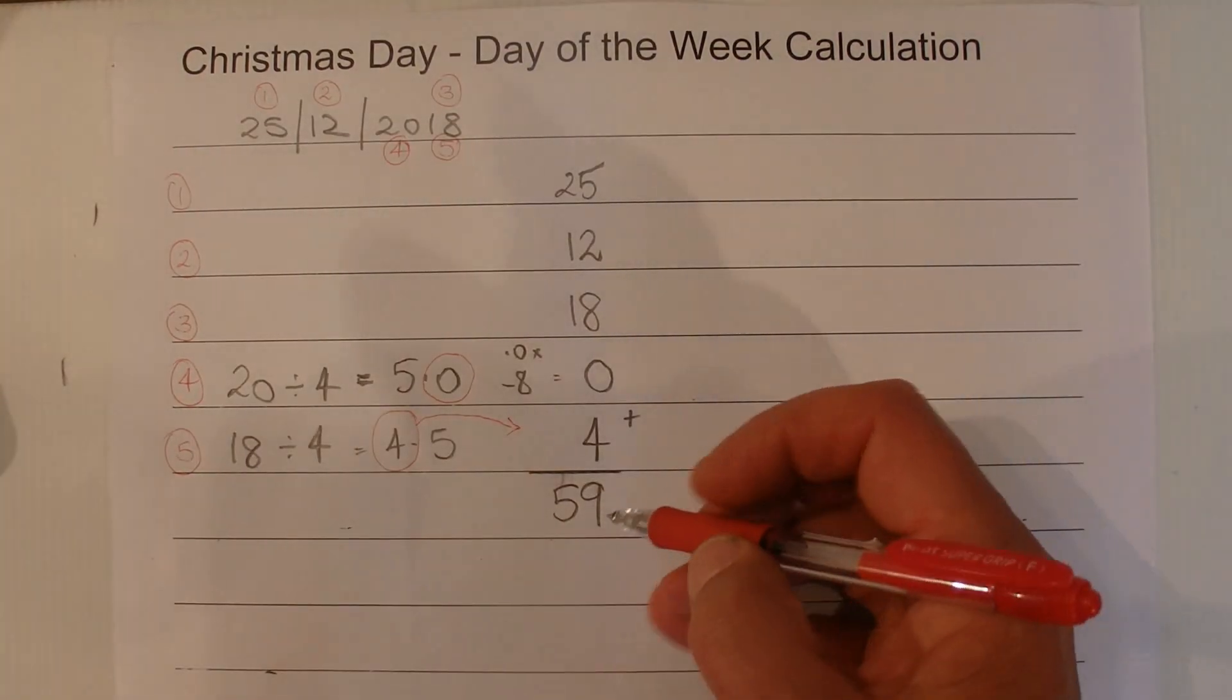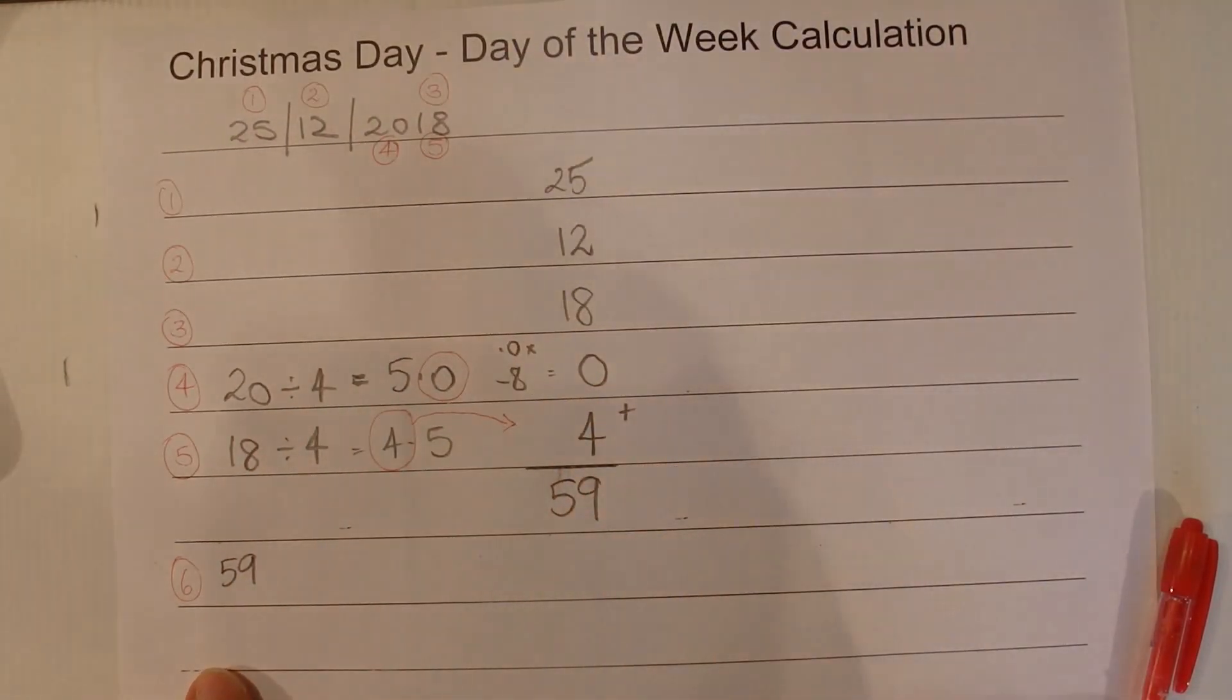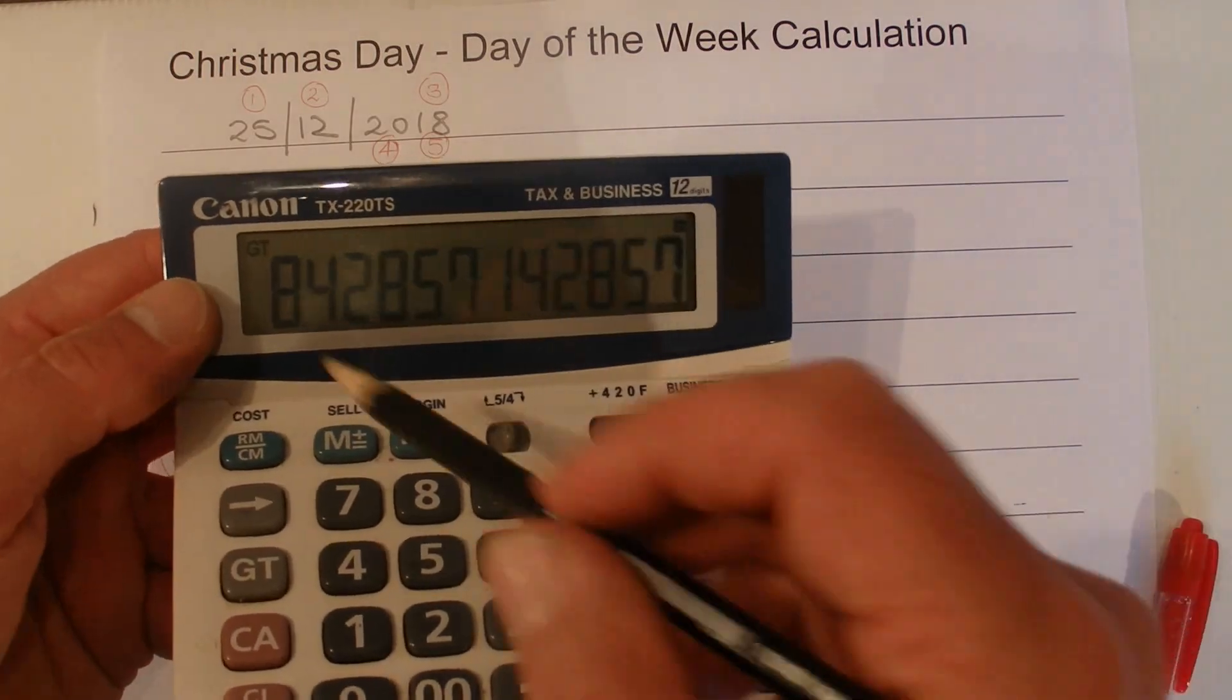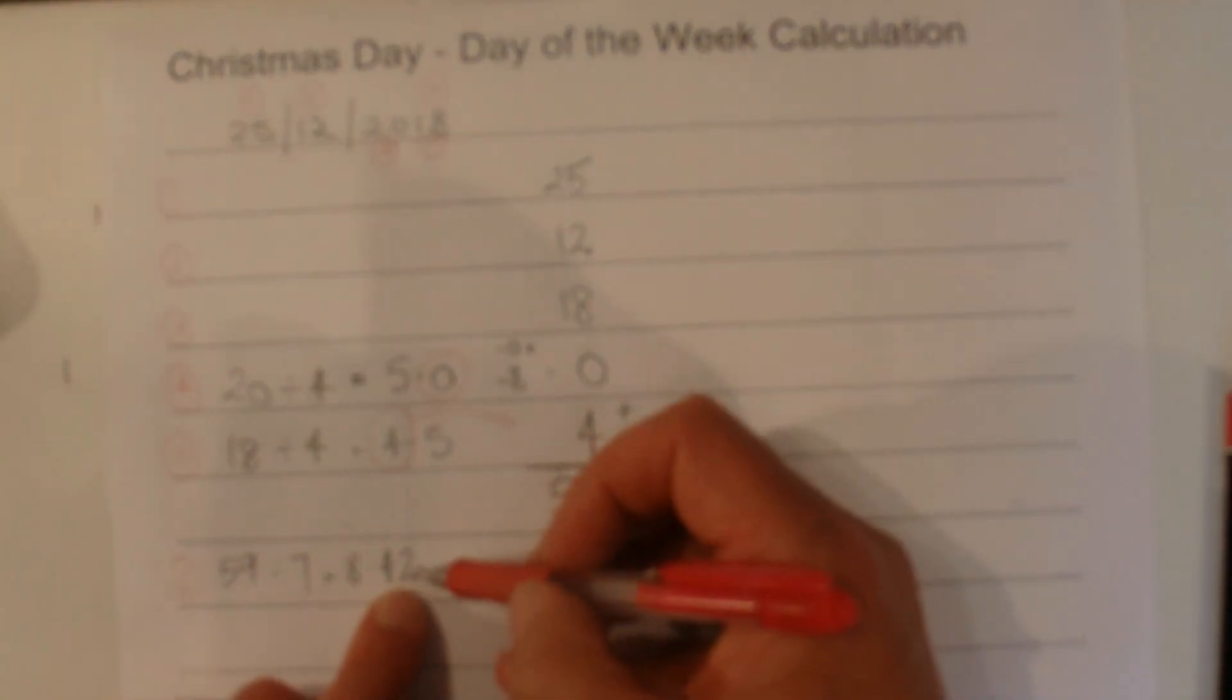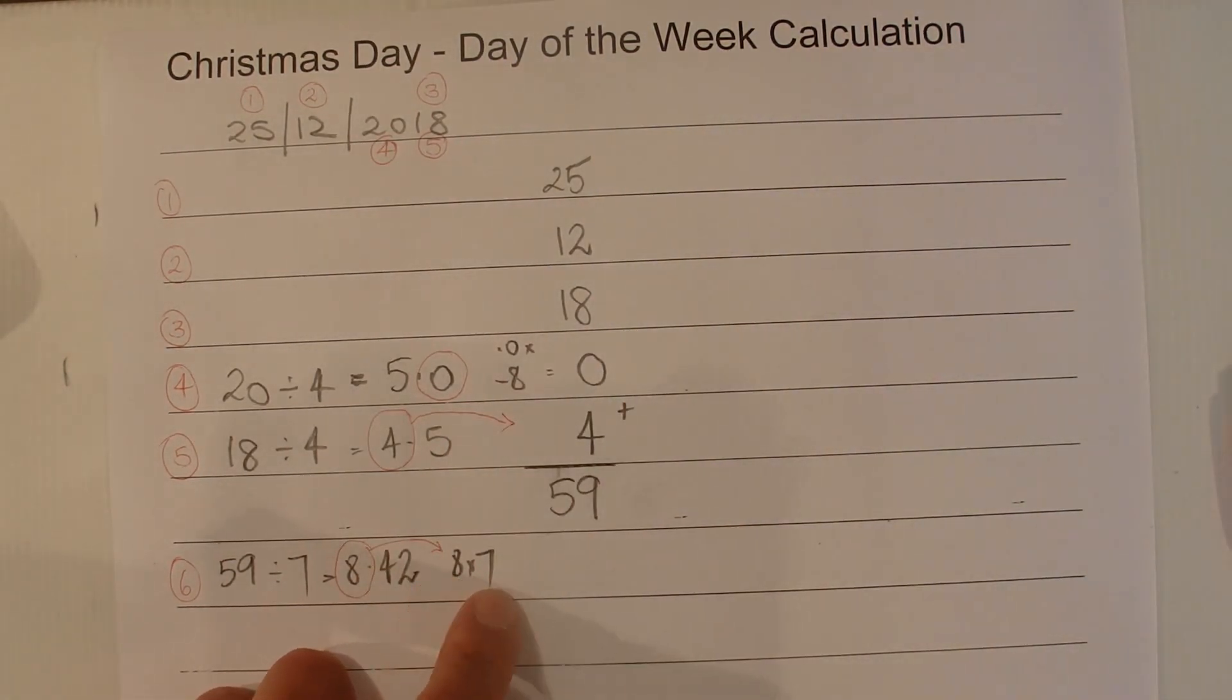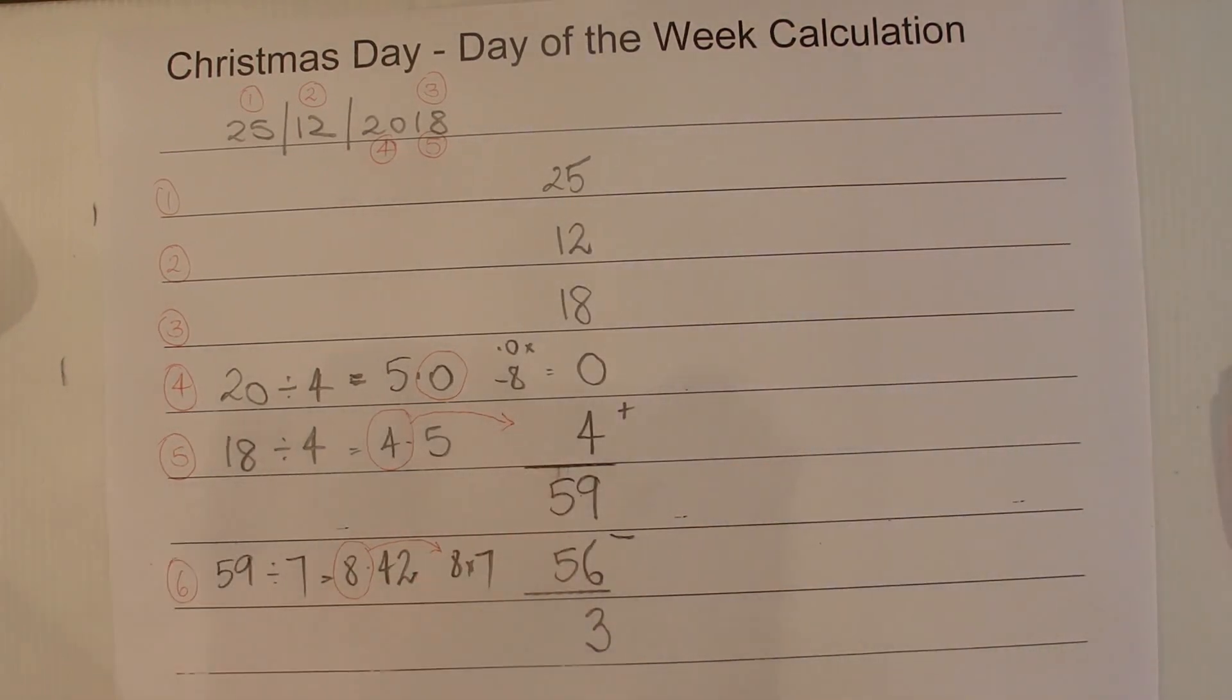OK, so with the 59 as our answer, the sixth step then is to divide the 59 by 7 and find out what the remainder is. So 59 divided by 7, put that in my trusty calculator, 59 divided by 7. And the answer there is 8.428. So I'll write that down, just write the 4.2 I suppose. We're not really interested in anything after the decimal point, so we're just interested in the 8. So I'll put the 8 over there. And multiply that by 7. 8 sevens are 56. And then start off with a 59 and take away 56. And then our remainder then is 3.